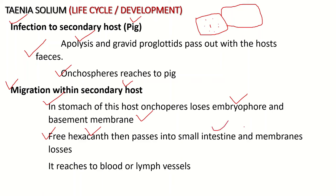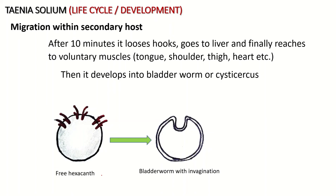From the small intestine, the hexacanth loses some membranes and reaches the blood or lymph vessels by penetrating the intestinal epithelium. After about 10 minutes it loses its hooks, which were useful to anchor the intestinal walls. The secretion of penetration glands dissolves these hooks and the intestinal tissues.